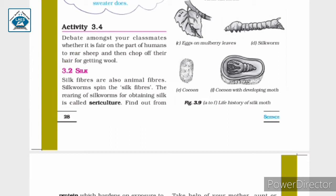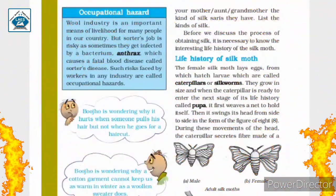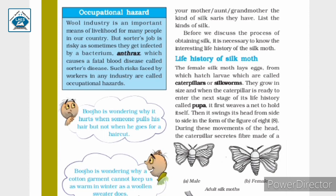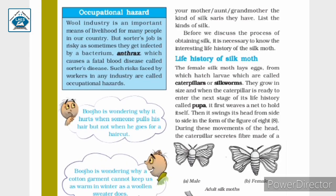The next topic we are going to discuss is silk. Silk fibers are also animal fibers. Silkworms spin the silk fibers. The rearing of silkworms for obtaining silk is called sericulture. Before we discuss the process of obtaining silk, it is necessary to know the interesting life history of the silk moth.